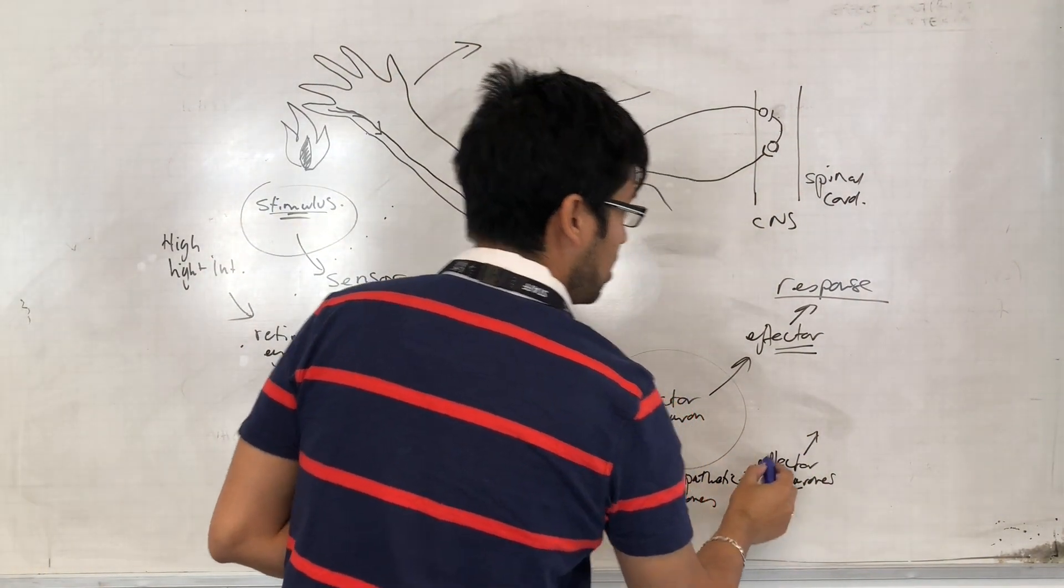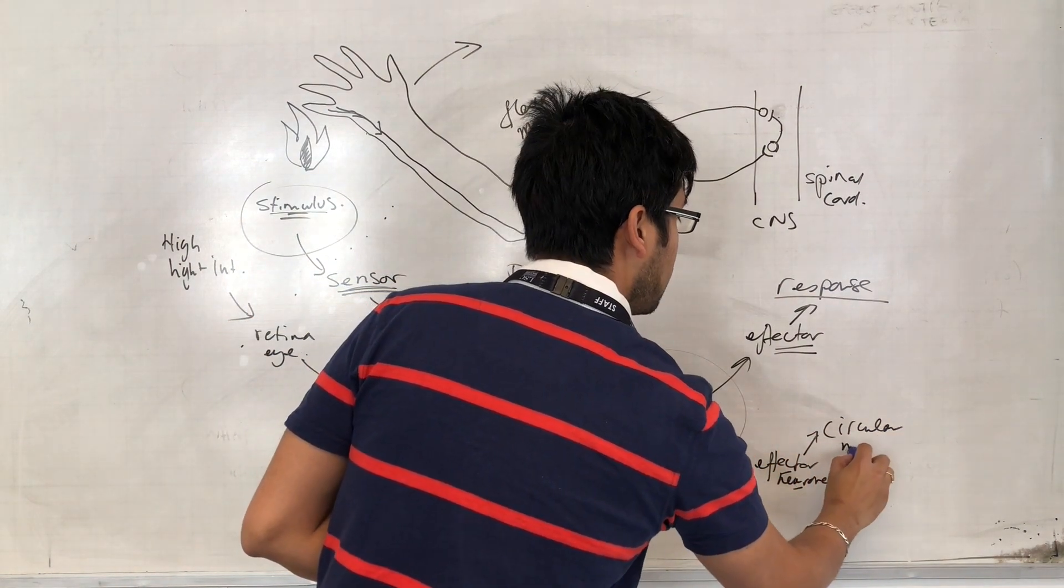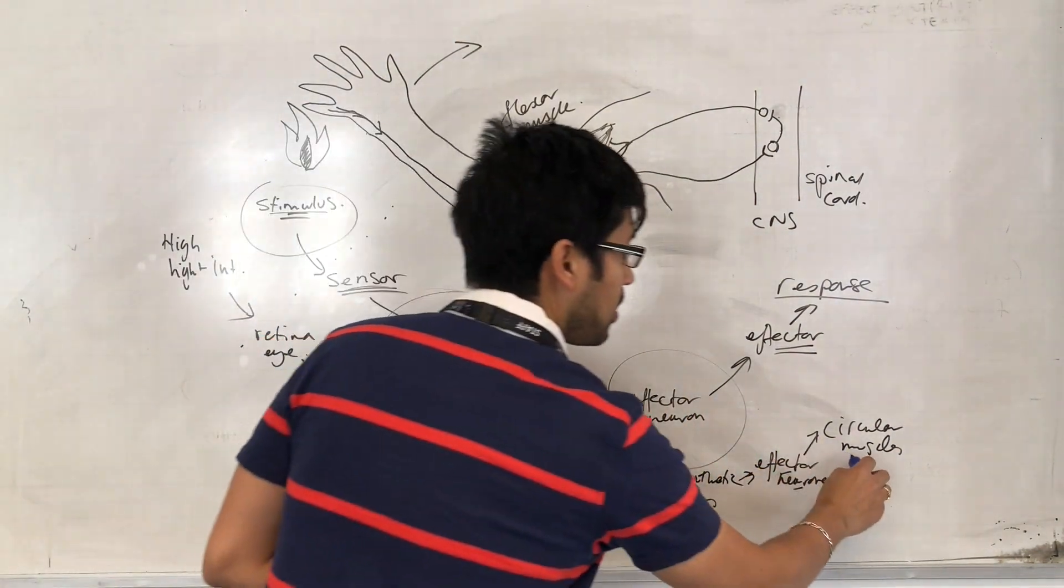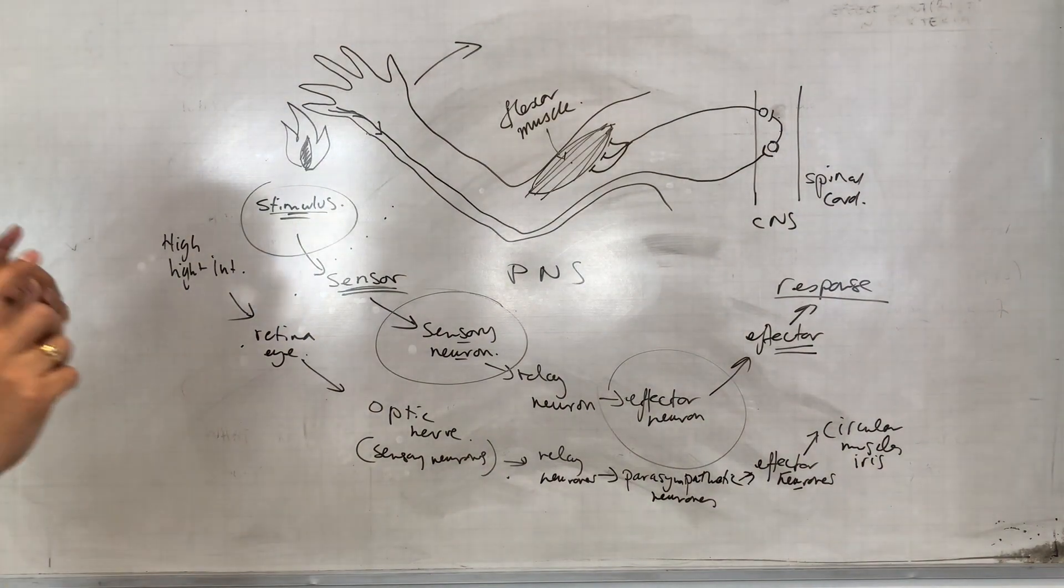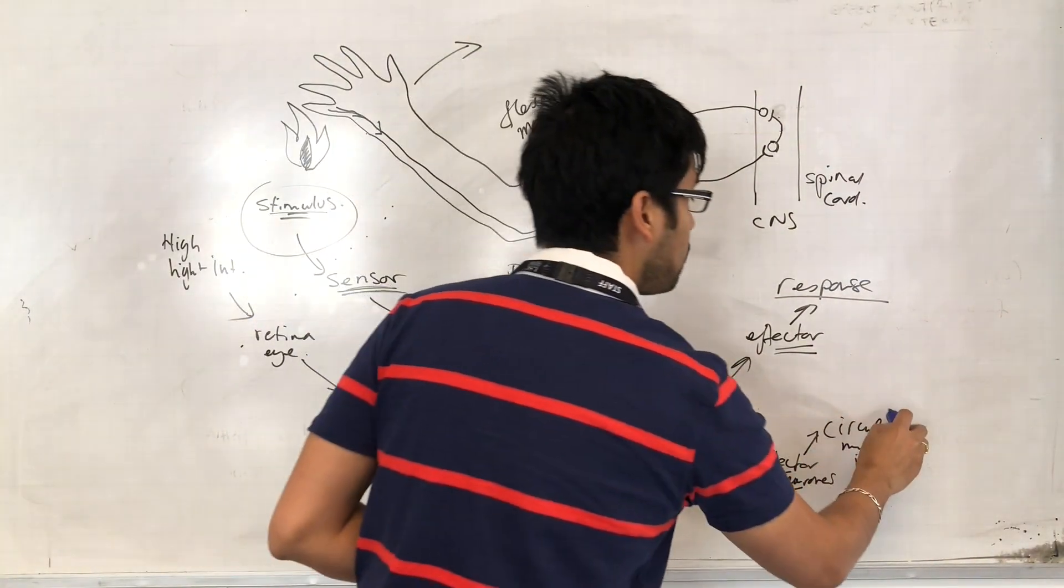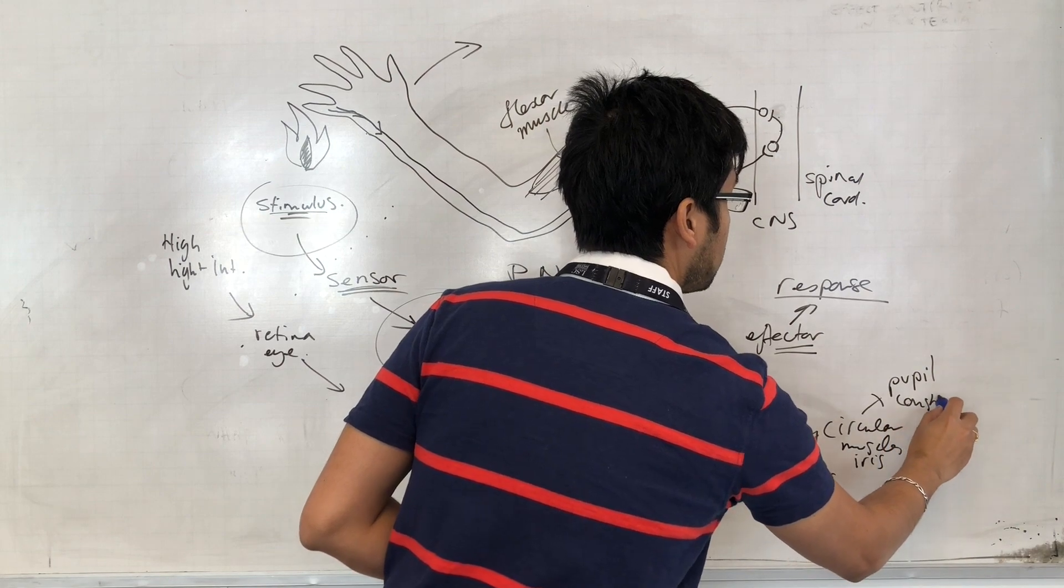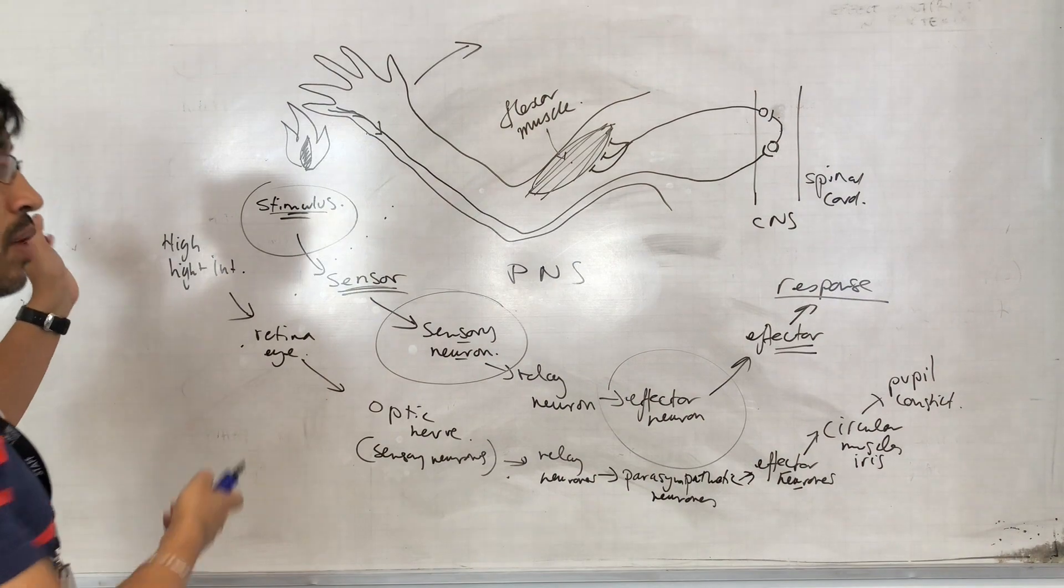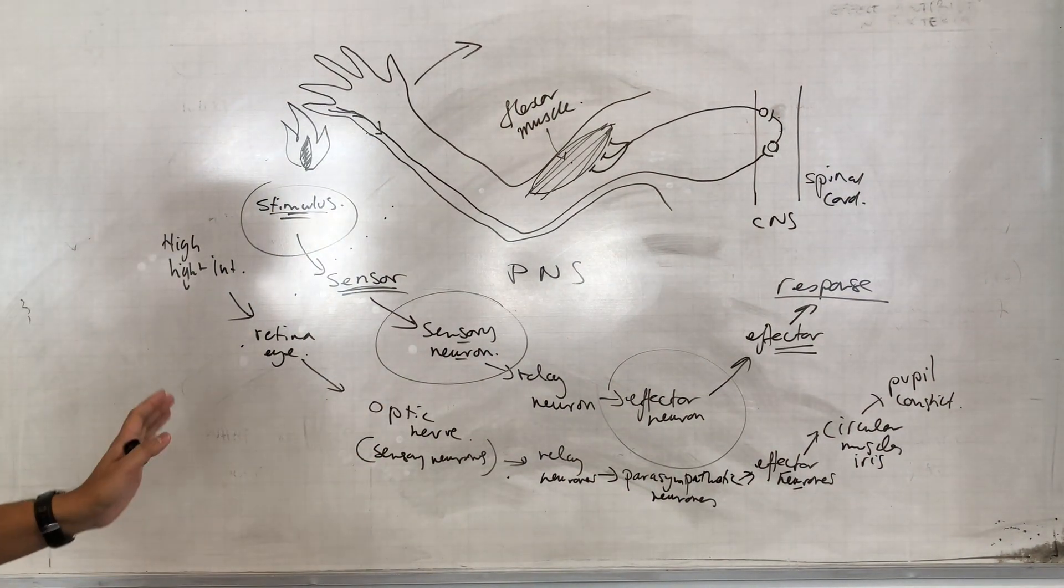So the effector neurons are going to cause the circular muscles in the iris to contract, causing the pupil to constrict. And when the pupil has constricted, less light will come into the eye, and then we'll be able to generate an appropriate image.